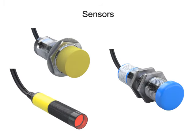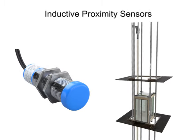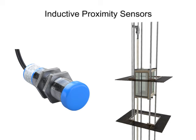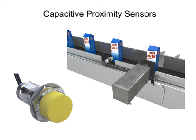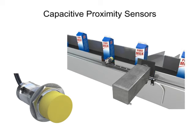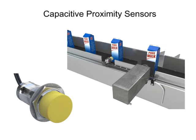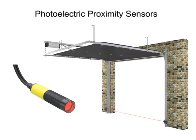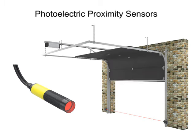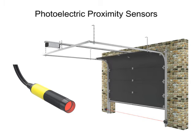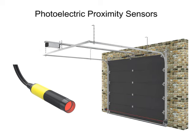Sensors of various types help us in everything we do and consume. Inductive proximity sensors are used in elevators, for example. Capacitive proximity sensors are used to detect liquids and other dielectric materials on the manufacturing floor. And photoelectric sensors are used in our homes and in countless other applications. Let's take a closer look at how these three common types of sensors work.